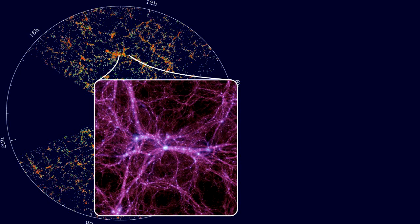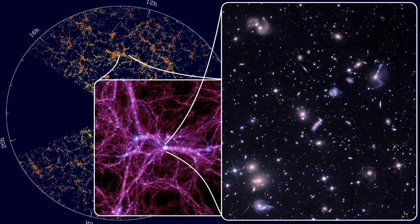This structure consists of elongated filaments and flattened walls that surround large, nearly empty voids. At the nodes of the web, we find dense and compact clusters, agglomerates of thousands of galaxies.